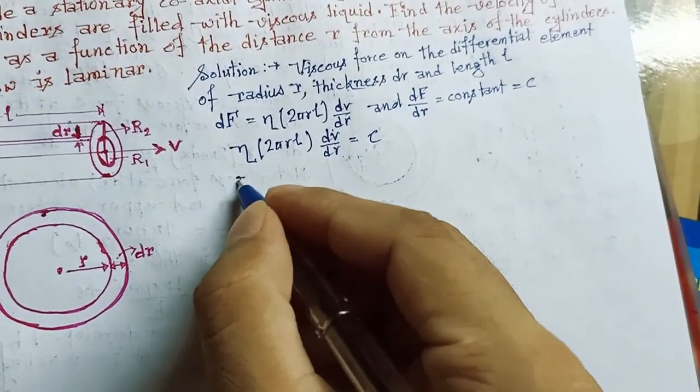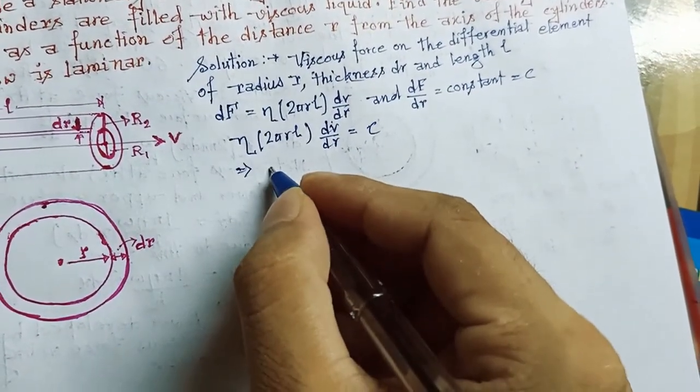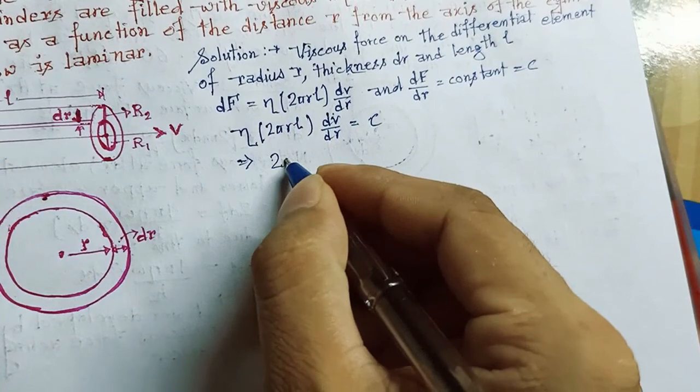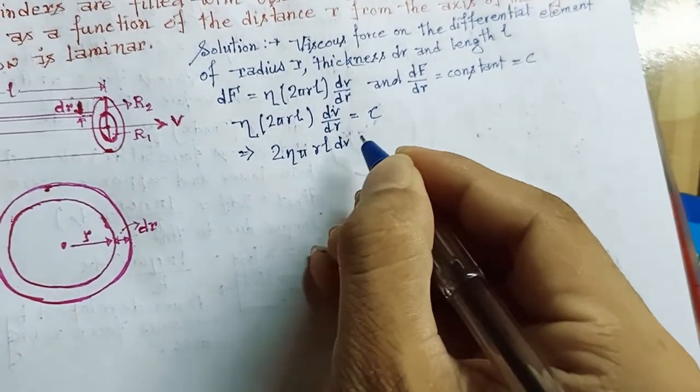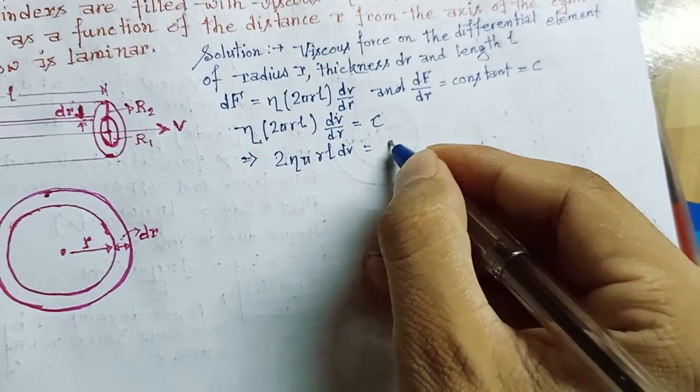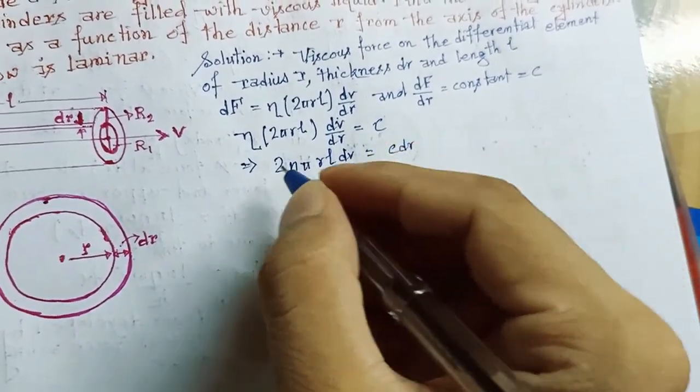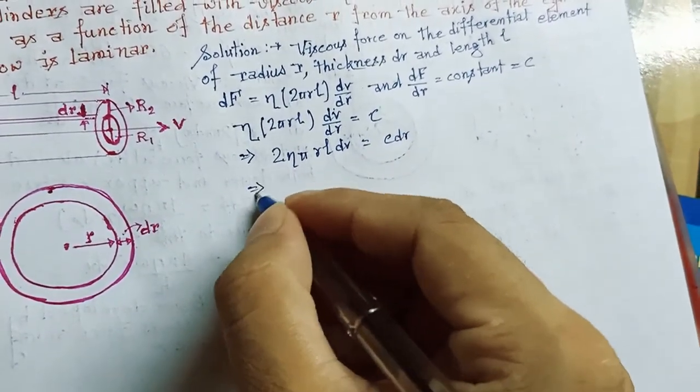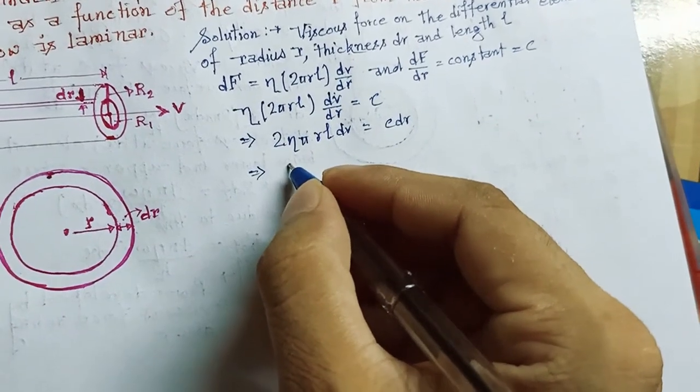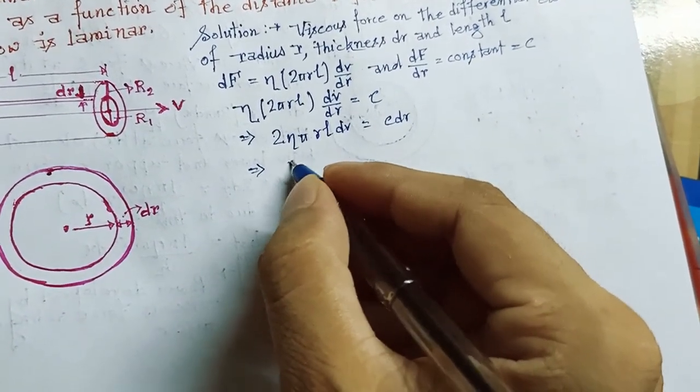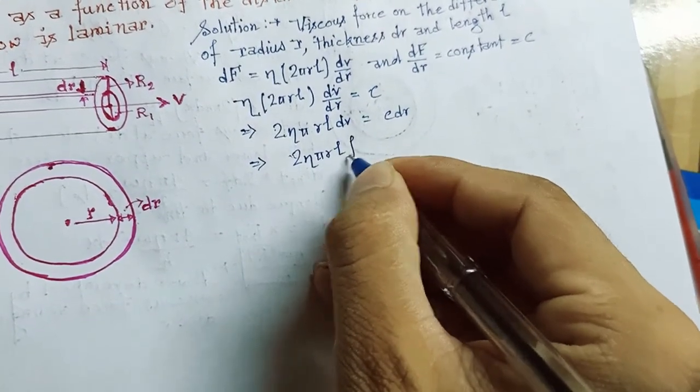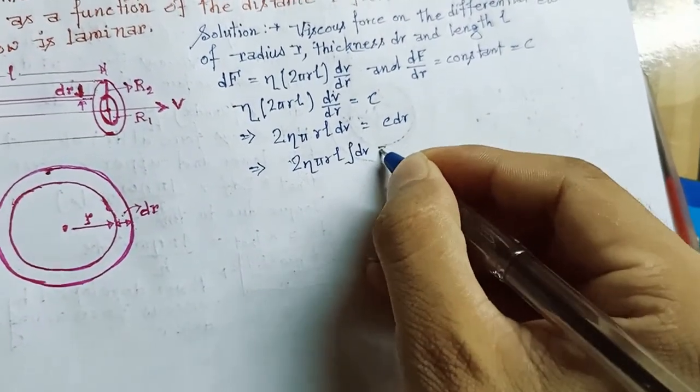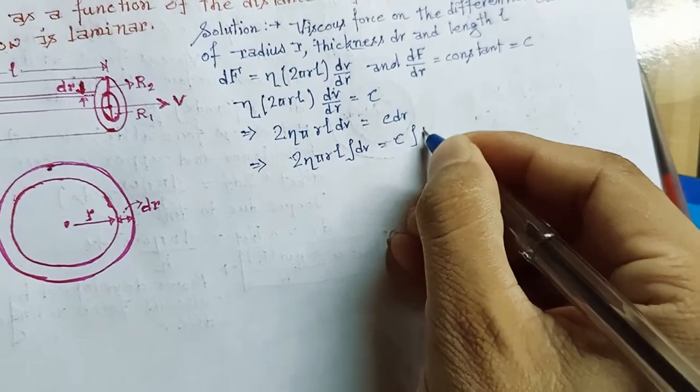Now if we cross multiply this, then we will get 2 eta pi r l dv will be equal to C into dr. Now if we integrate both sides, then it becomes 2 eta pi r l integration of dv is equal to C integration of dr.